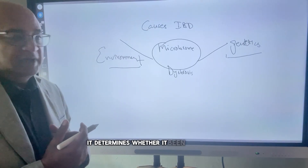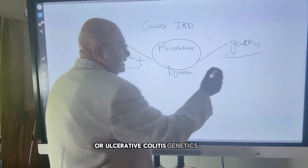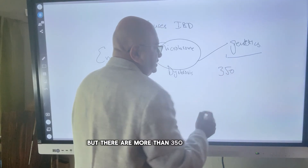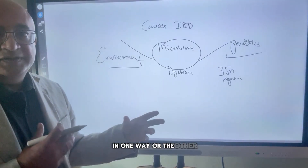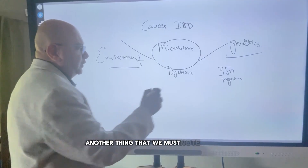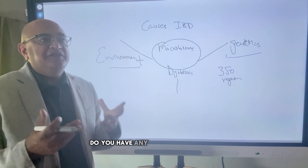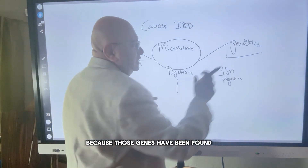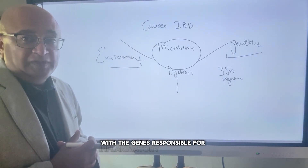It then determines whether it presents in the form of Crohn's disease or ulcerative colitis. Genetics-wise, the studies are still ongoing, but there are more than 350 regions in the genes that have been found to have a connection with inflammatory bowel disease. Another important thing is that we always ask patients whether they have any family member with an autoimmune disease, because those genes have been found in close proximity with the genes responsible for inflammatory bowel disease.